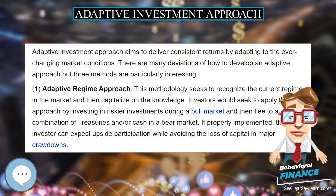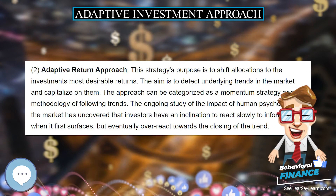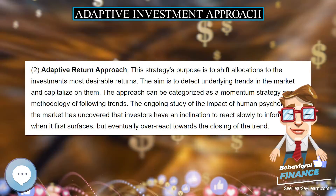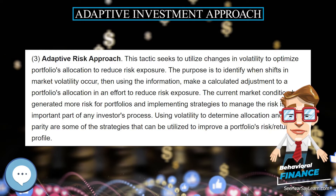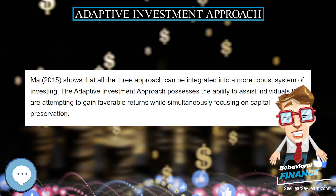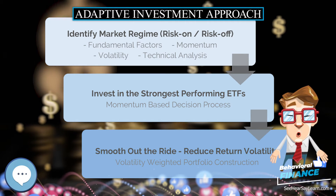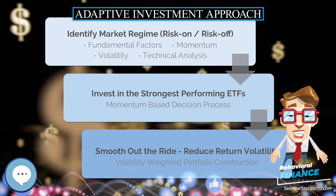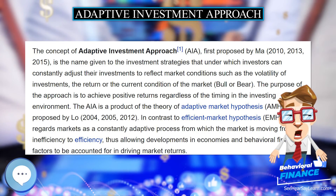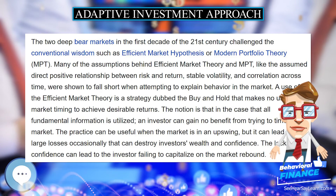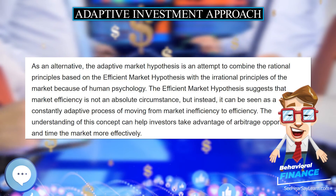3. Adaptive Risk Approach. This tactic seeks to utilize changes in volatility to optimize a portfolio's allocation and reduce risk exposure. The purpose is to identify when shifts in market volatility occur, then use that information to make a calculated adjustment to a portfolio's allocation. The current market conditions have generated more risk for portfolios, and implementing strategies to manage that risk is an important part of any investor's process. Using volatility to determine allocation and risk parity are some strategies that can improve a portfolio's risk/return profile.